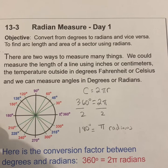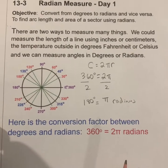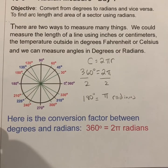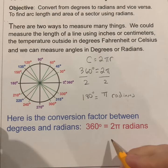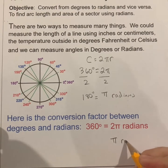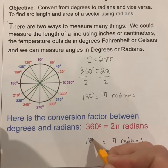Just like there is a formula to convert from Celsius to Fahrenheit and vice versa, there are formulas to convert from degree measure to radian or radian measure to degree. This all comes down to the fact that a 360-degree circle equals 2π radians, and that π radians equals 180 degrees.